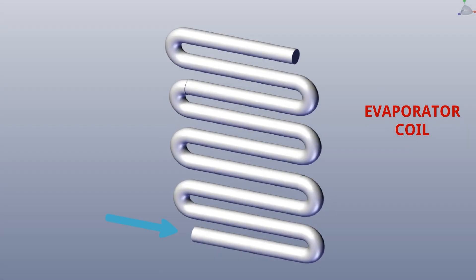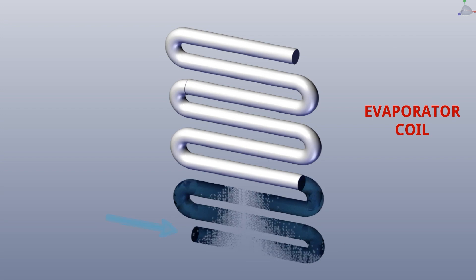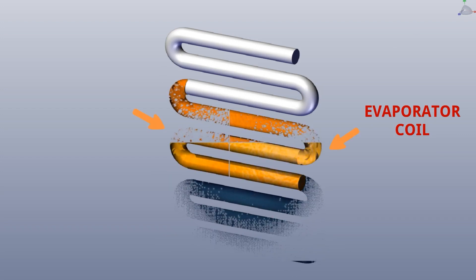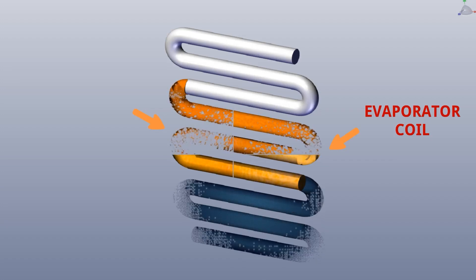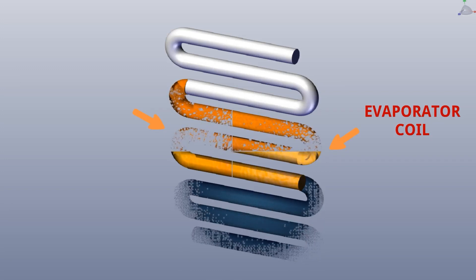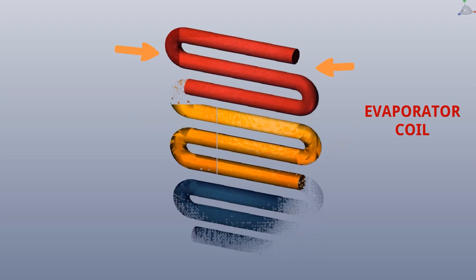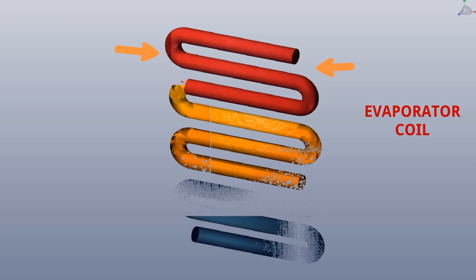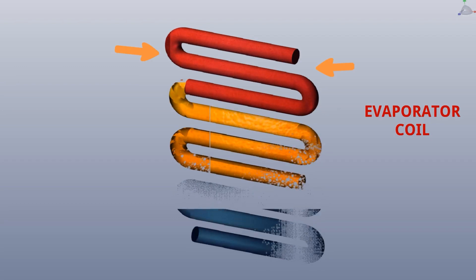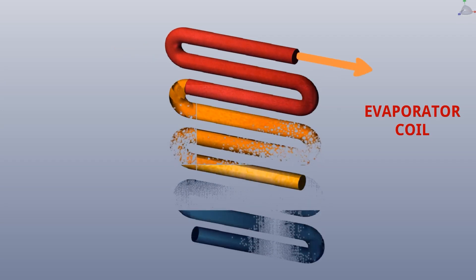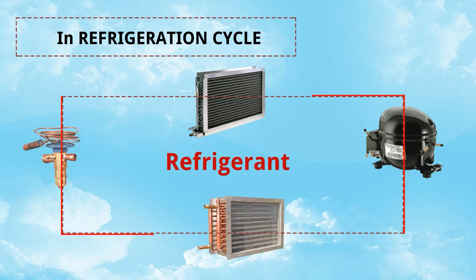This is the evaporator coil. Cold refrigerant enters the evaporator coil and takes heat from the surrounding air, becoming heated and forming a liquid-plus-vapor mixture. The liquid refrigerant changes into liquid plus vapor as temperature increases. Then it takes more heat and finally becomes refrigerant vapor — first saturated vapor, and then slightly superheated vapor — and it leaves from the evaporator coil.